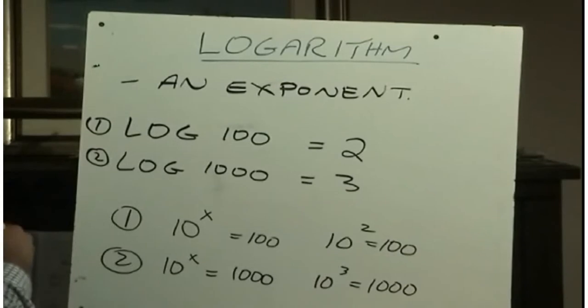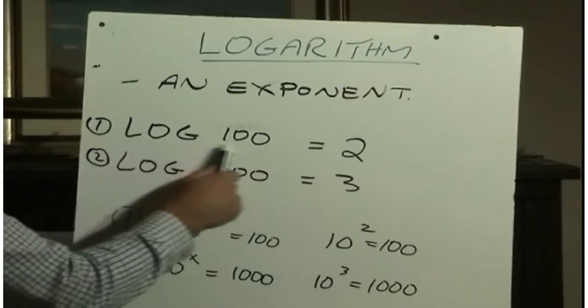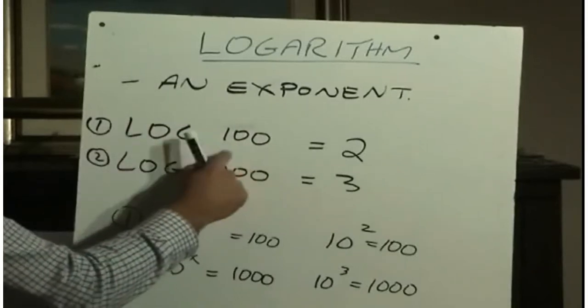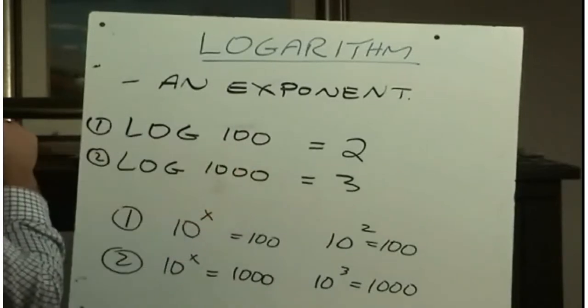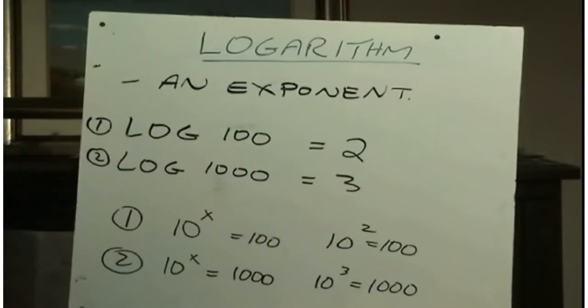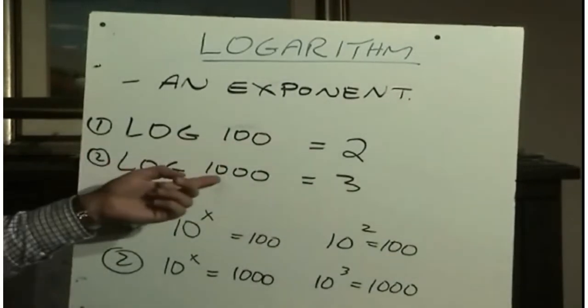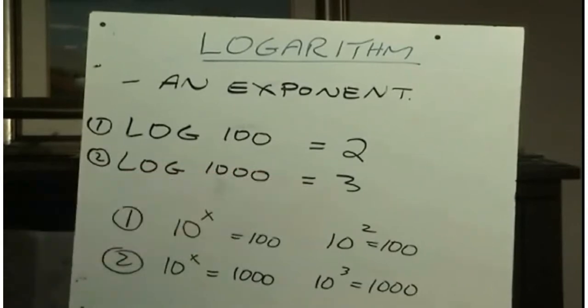So logarithm questions always ask, what is the exponent? That's the question. When you see log of 100, it's saying what exponent of 10 will equal 100, which is 2. And down here, what exponent of 10 would equal 1000? That would be 3.